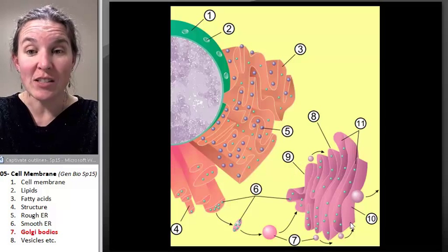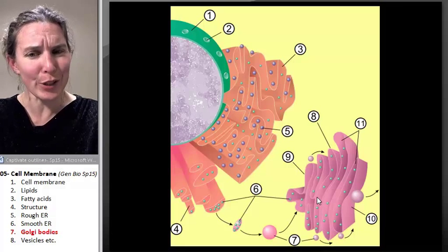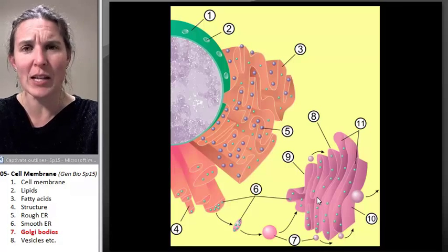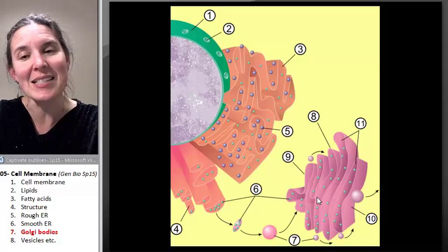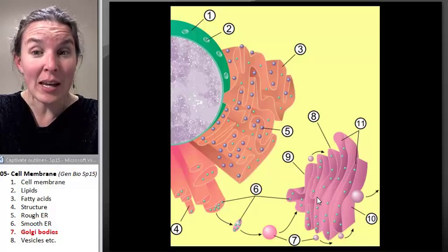The Golgi bodies look like a flattened stack of pancakes. Here they are. And they really look just like endoplasmic reticulum. And it is. Because remember, what is all this stuff made out of? It's all made of cell membrane.